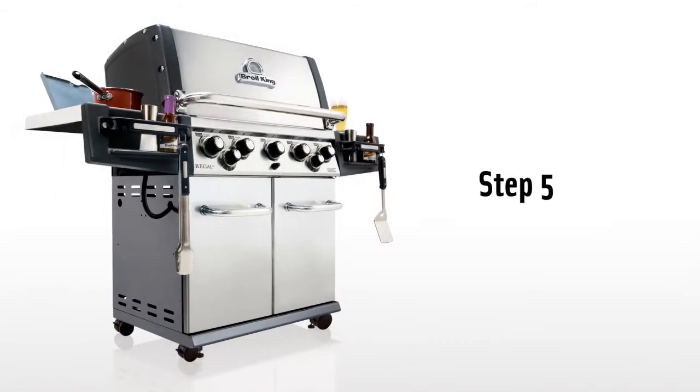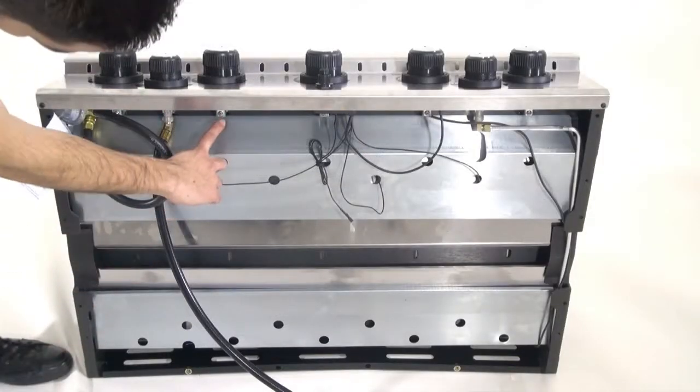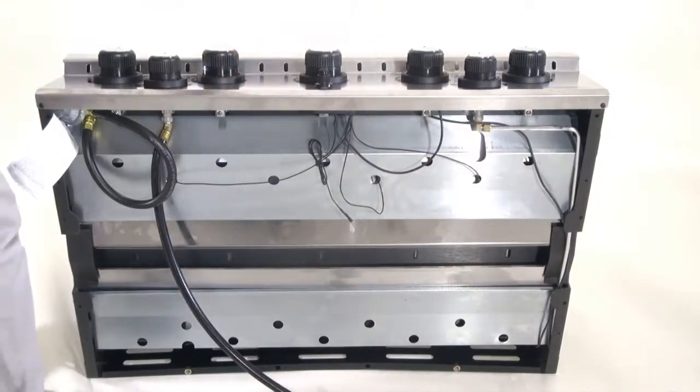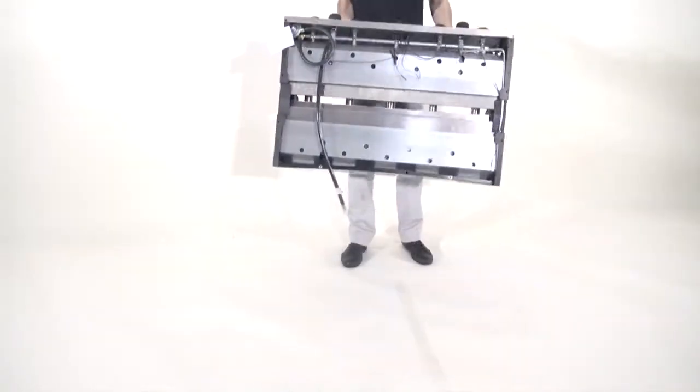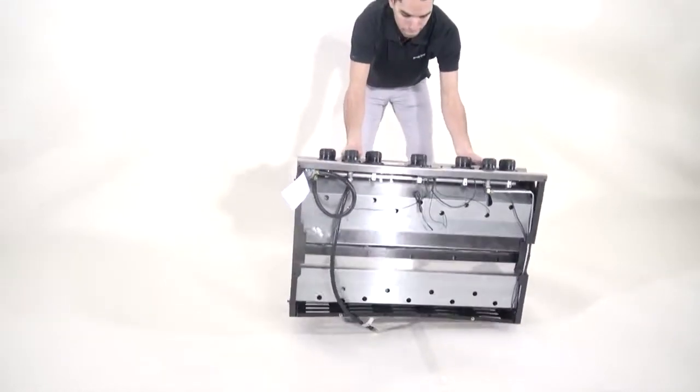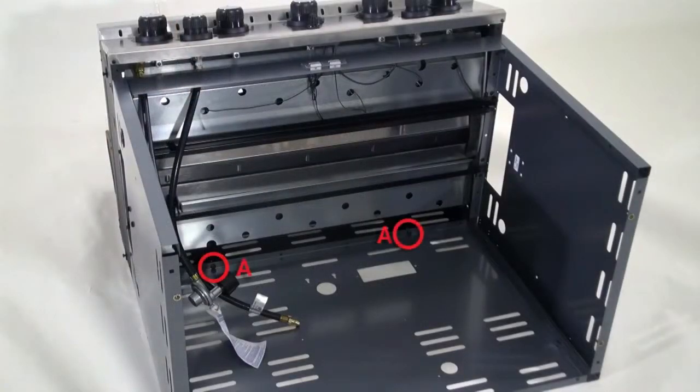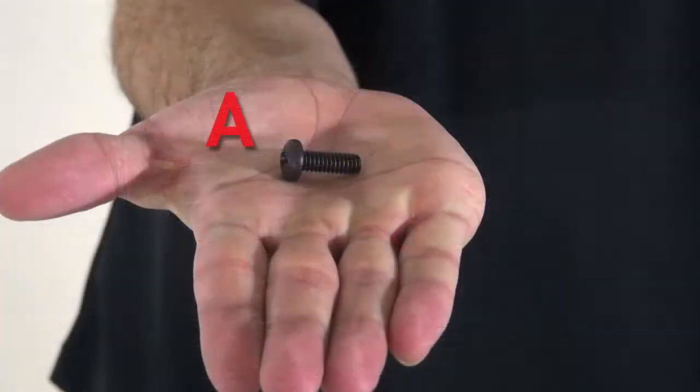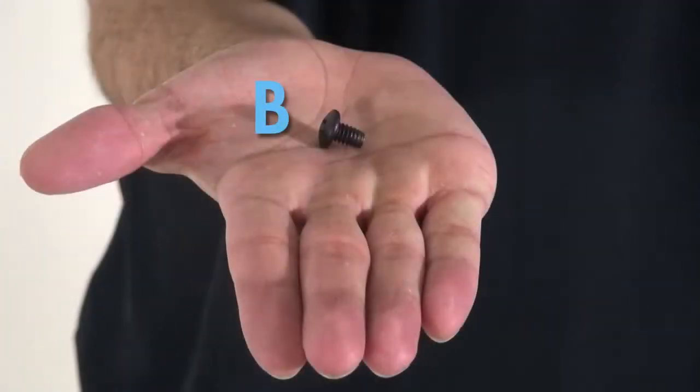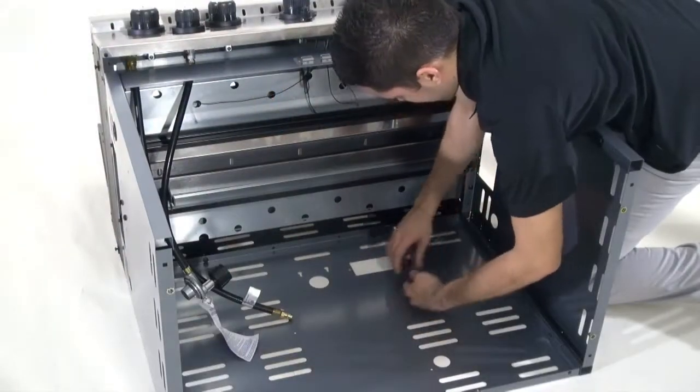Step 5. The cook box of your BroilKing barbecue is already attached with valves, igniter, and subframe completed. Remove anything packed in the cook box and then lay the cook box on its back. Also, lay the assembled cabinet on its back and attach the cook box using six bolts. Now tighten using your screwdriver.